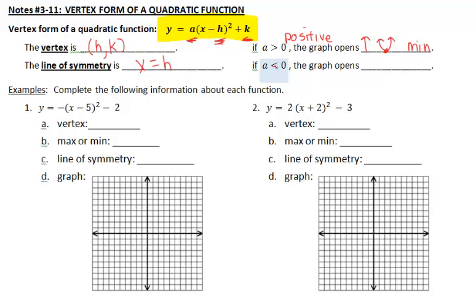If a is less than zero, or in other words, if a is negative, the graph opens down, the quadratic looks like a hill, and that vertex is the tip-top point, so in other words, it's the maximum on the graph.